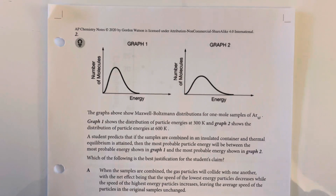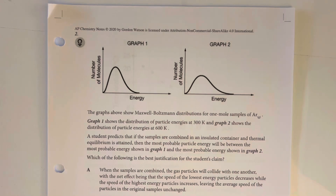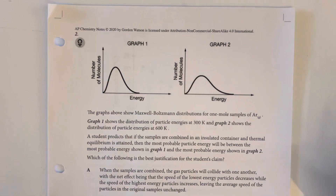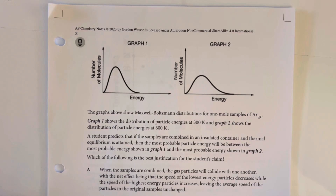Unit 6.3 Practice Problems. The graphs above show Maxwell-Boltzmann distributions for one mole samples of argon. Graph 1 shows the distribution of particle energies at 300 Kelvin, and graph 2 shows the distribution of particle energies at 600 Kelvin.